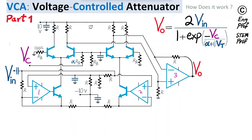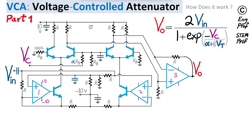Let's now examine the DC behavior of this circuit. We have ±10V DC supplies in this schematic — it's a dual-supply design. The op amps are wired with negative feedback; we assume the ±10V supplies are applied to all op amps so they are properly biased.